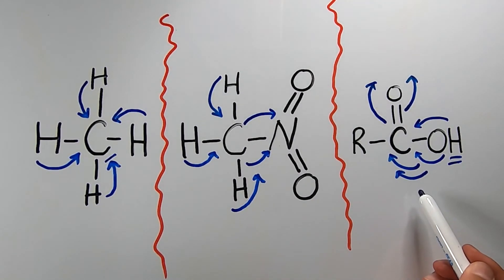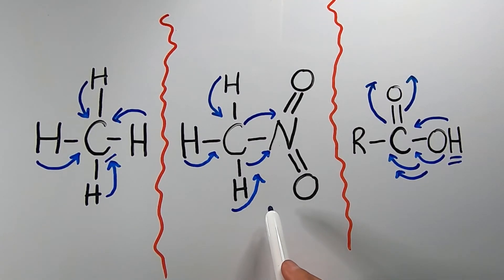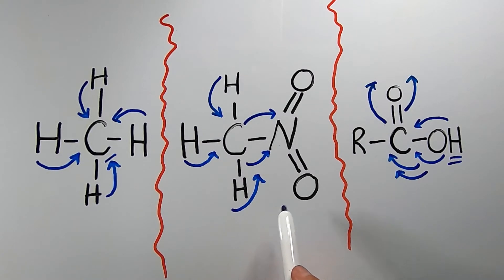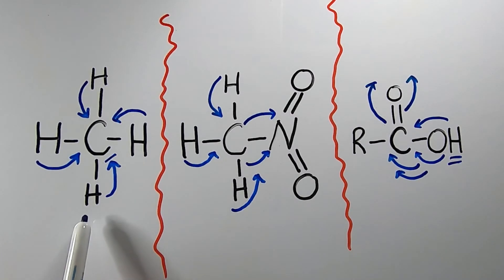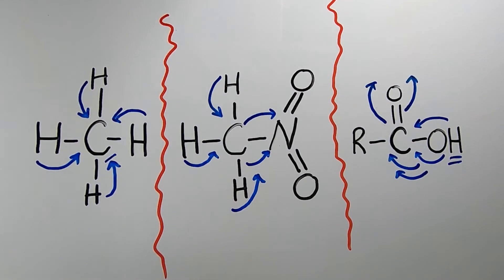The most deshielded hydrogens would be found downfield on the HNMR spectrum. The second most deshielded would be found somewhere in the middle, still downfield. And the least deshielded would be found more upfield, toward the TMS signal. We'll see exactly where they lie on the graph in just a moment.